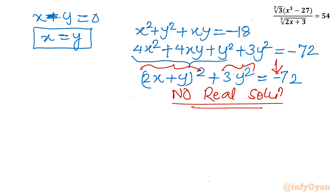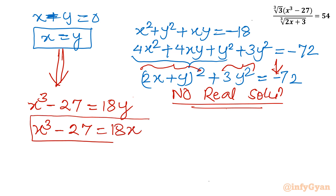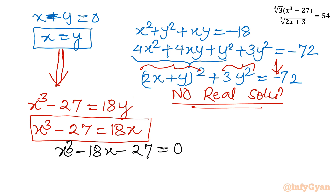For the first case, x - y = 0 means x = y. Substituting x = y into Equation 1: x³ - 27 = 18x. Rearranging gives the cubic equation x³ - 18x - 27 = 0, which we now need to solve.